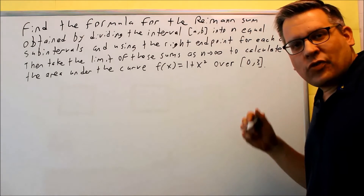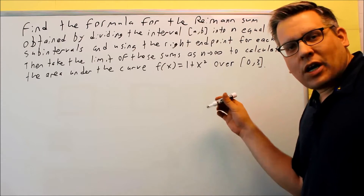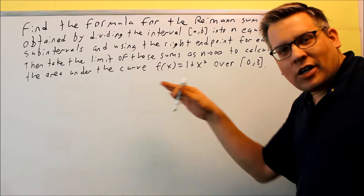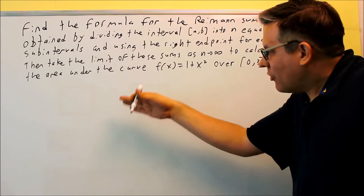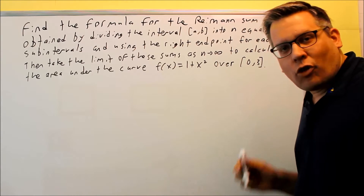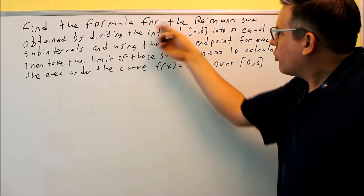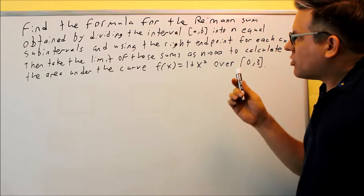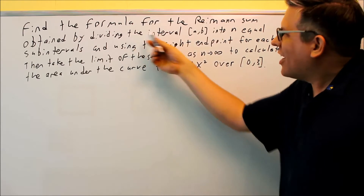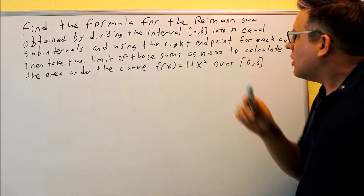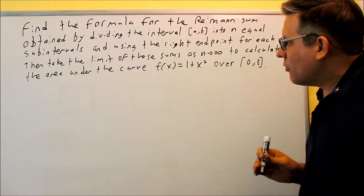Hopefully you've already watched the previous video that talks about the theory behind how you find the sum of the areas of all the different rectangles — that formula we're going to be using here. We're working with Riemann sums, so we're going to find the formula for the Riemann sum obtained by dividing the interval [a, b] into n equal subintervals.